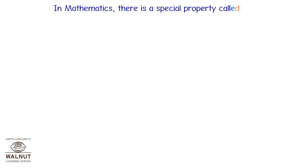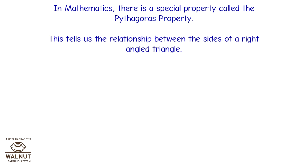Pythagoras Property. In mathematics, there is a special property called the Pythagoras property. This tells us the relationship between the sides of a right-angled triangle.